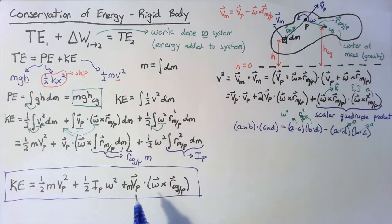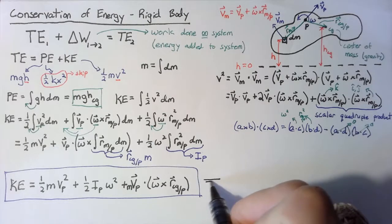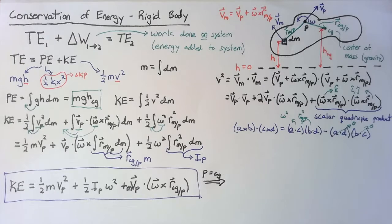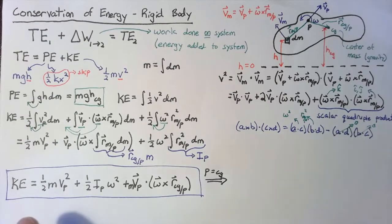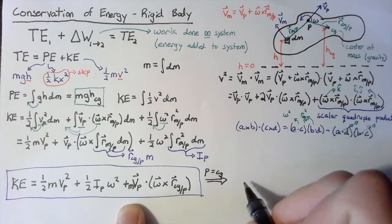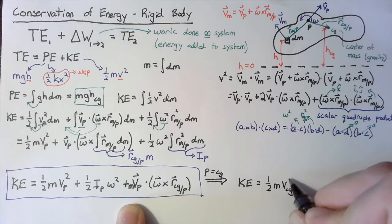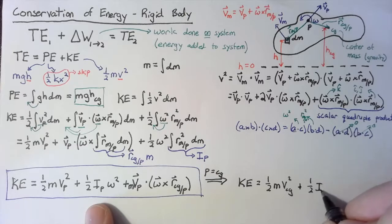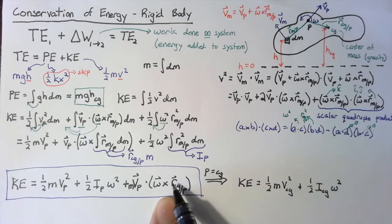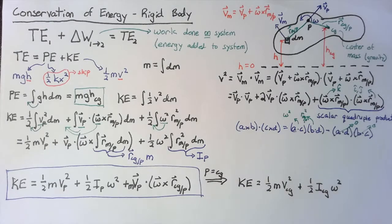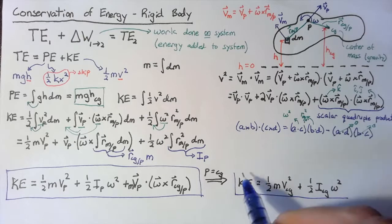This is the most general answer — we are rotating about a completely arbitrary point p. We can simplify by choosing p to be the center of gravity. If those points coincide, the final cross product term drops off completely. The kinetic energy becomes one half m v_cg squared plus one half I_cg omega squared, since the position vector of the cg with respect to p is zero.